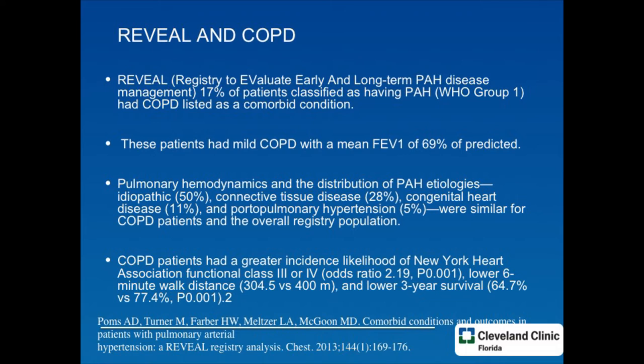Regardless, when pulmonary hypertension was associated with COPD in REVEAL, their NYHA functional class was higher and their six-minute walk test was lower — 304 versus 400 meters — and their three-year survival rate was also lower. So we know that COPD has existed and we've seen patients in trials with COPD.